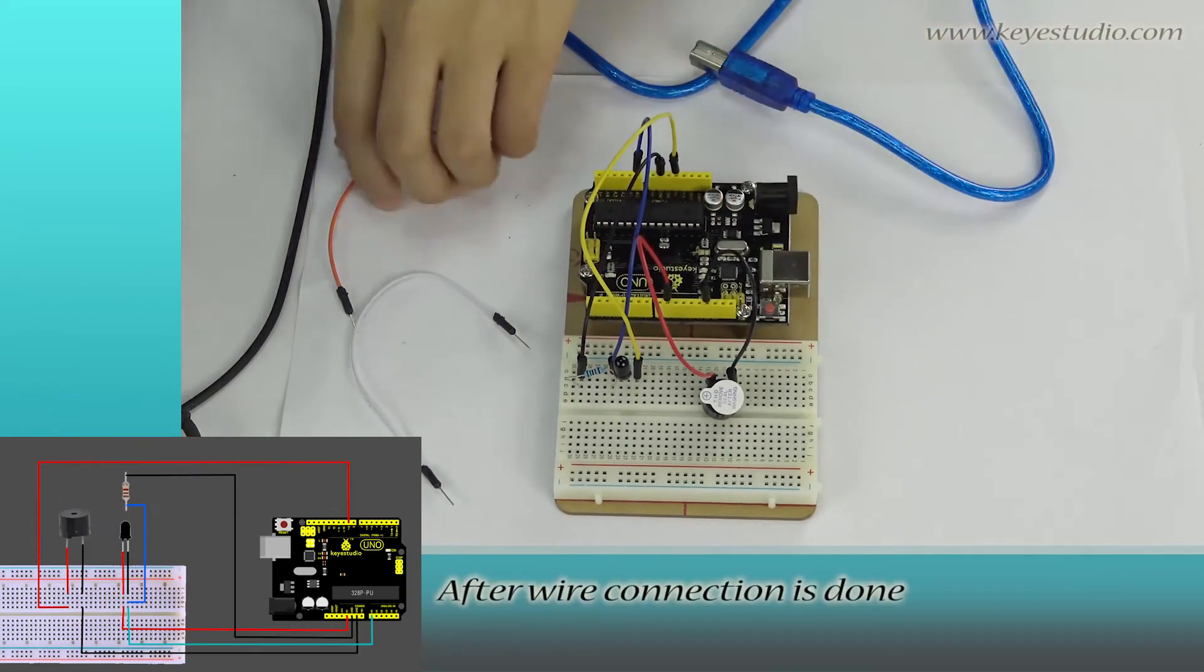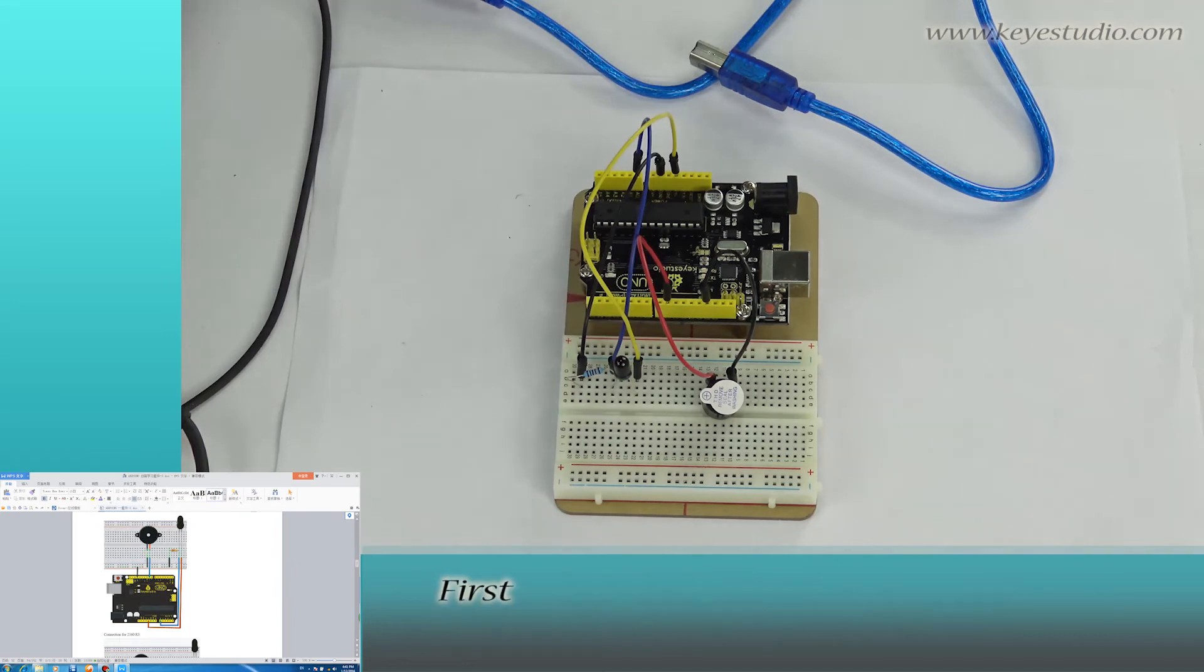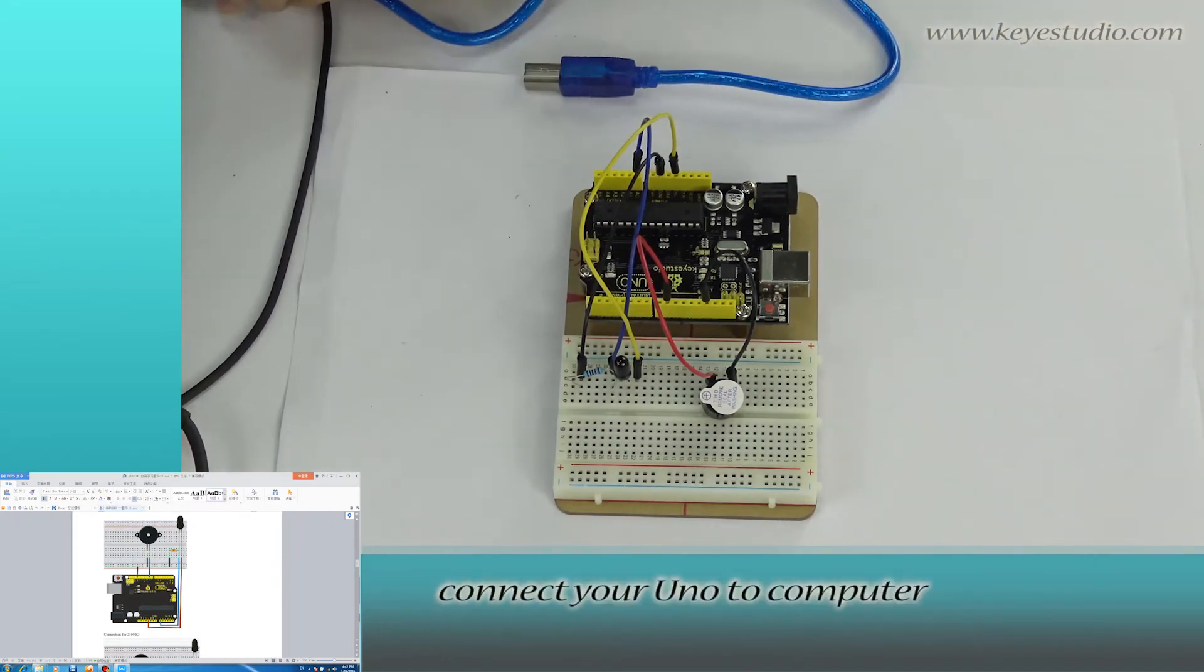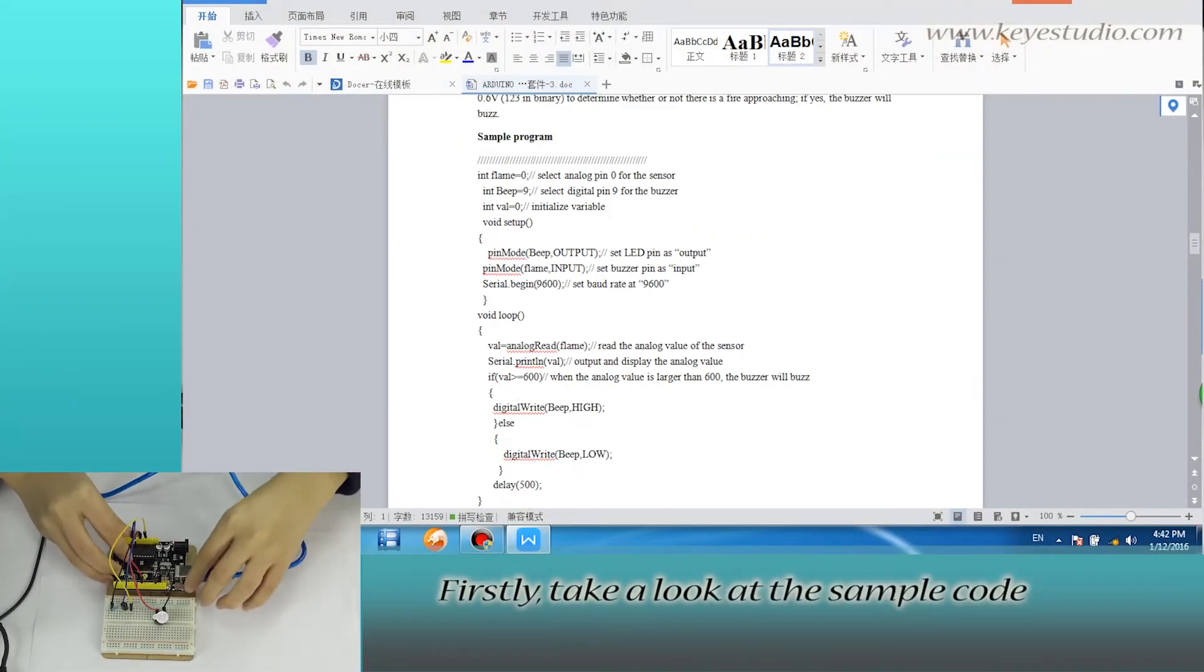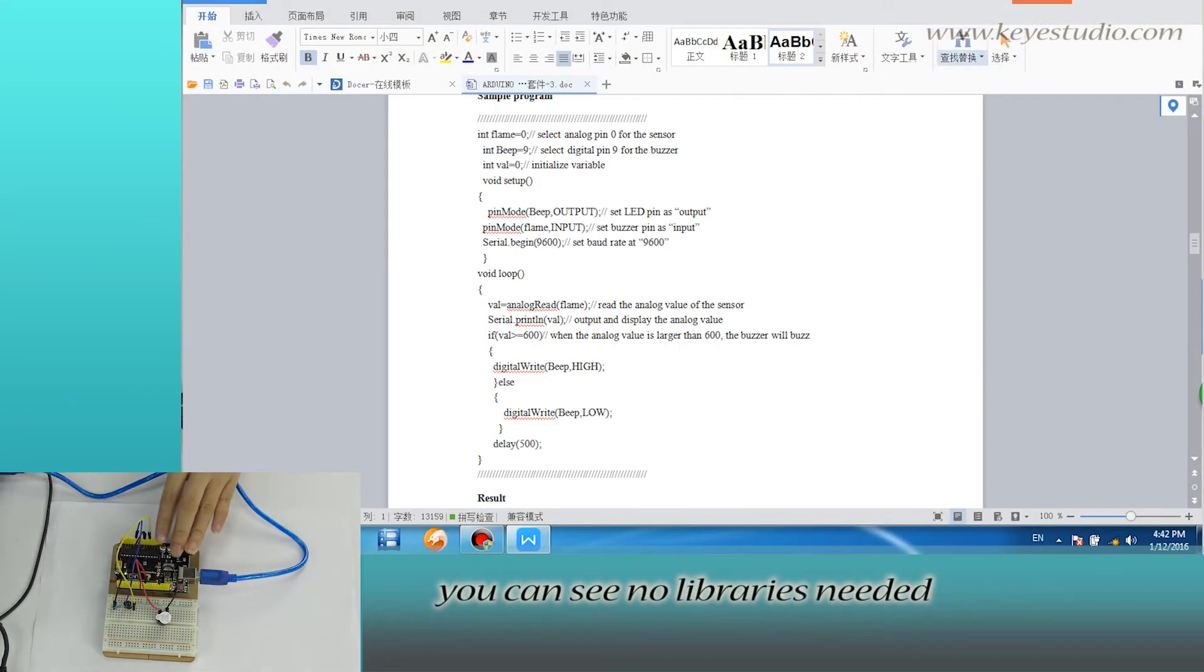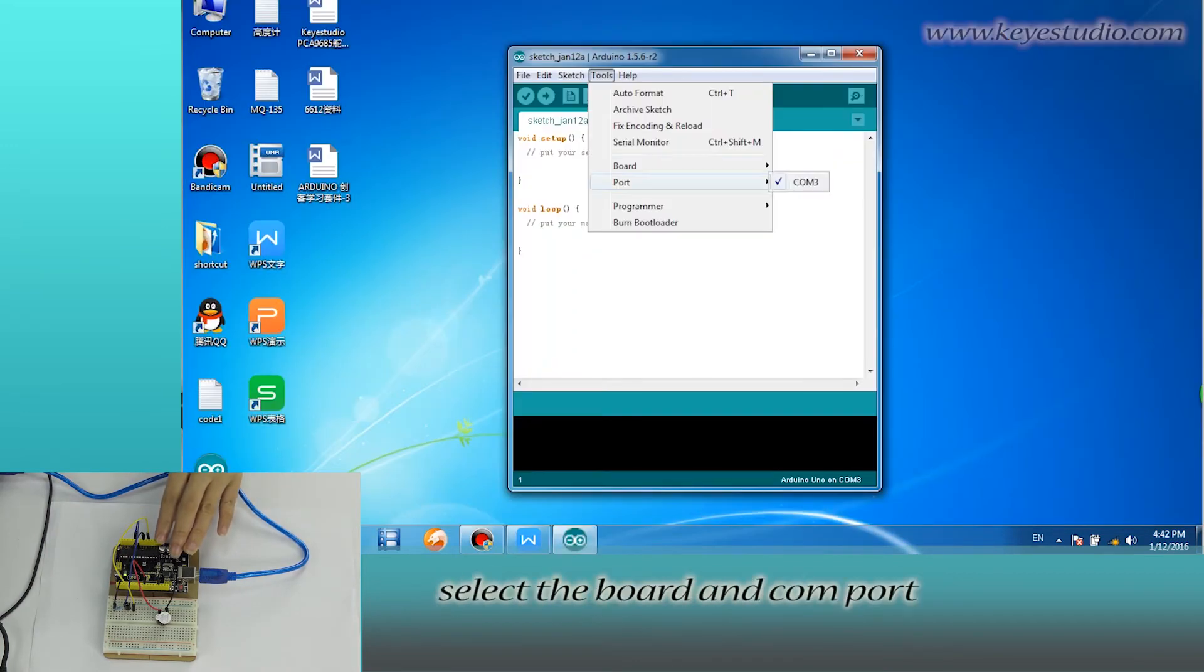After wire connection is done, let's upload the test program to the board. First, connect your UNO to computer with a USB cable. Take a look at the sample code. You can see no libraries needed. Now, open Arduino IDE. Select the board and COM port.